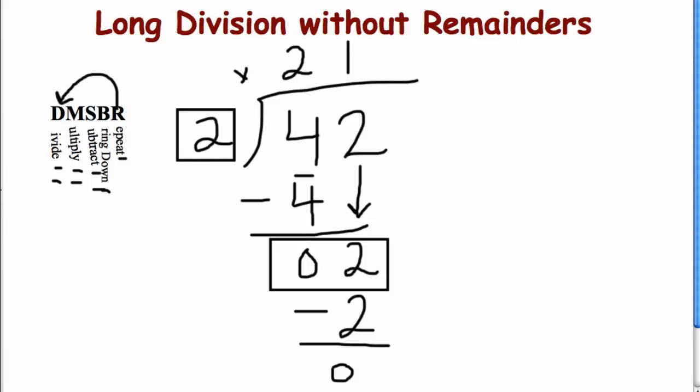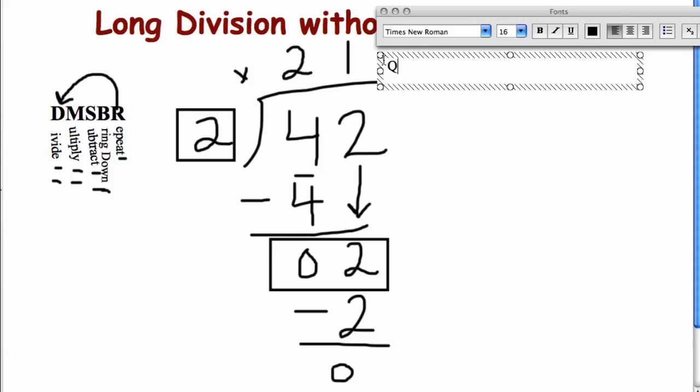Real quick, let's label our pieces of our division problem. Because I know you know this important vocabulary. This part right here, right on top of that bar, that is our answer. Another word for answer, a math word, a math vocabulary term is quotient. Quotient. Let's remember that quotient is our answer right here.